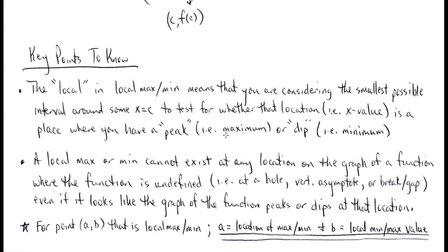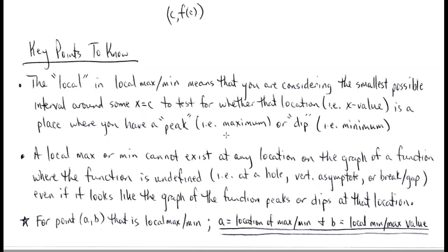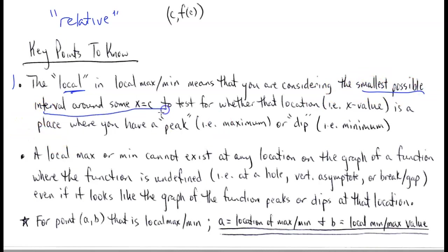Some key points to extract from the definition. First, the word 'local' or 'relative' in local max/min means you are considering the smallest possible interval around X equals C to test whether you have a peak (maximum) or dip (minimum) in your graph.